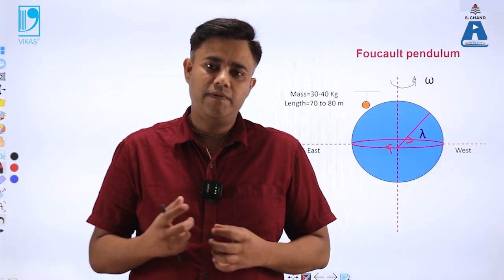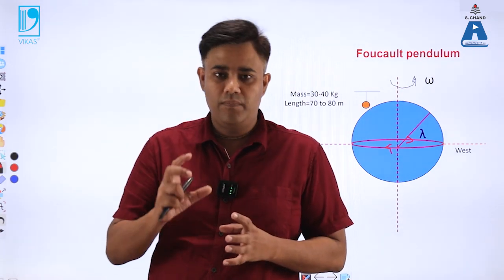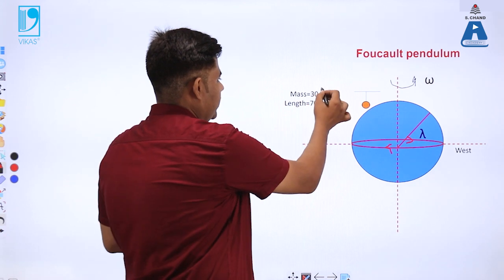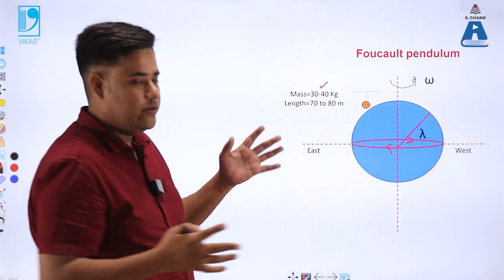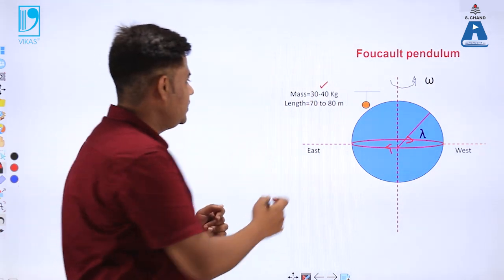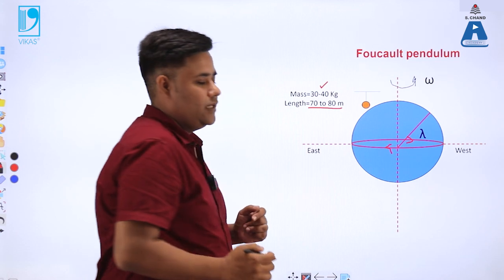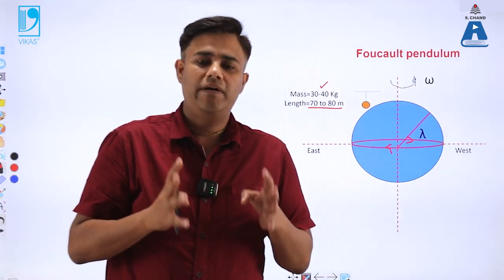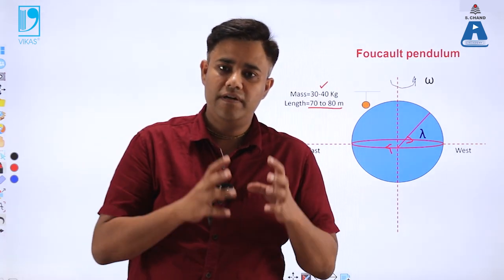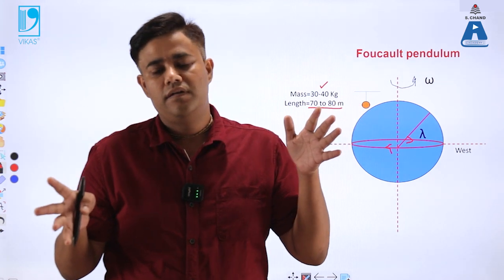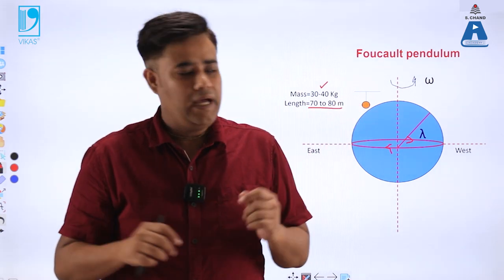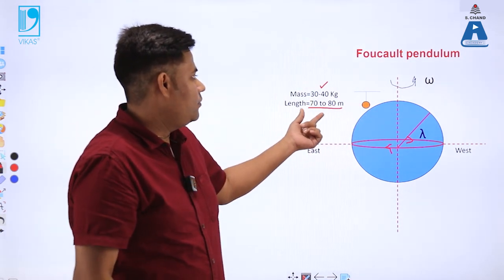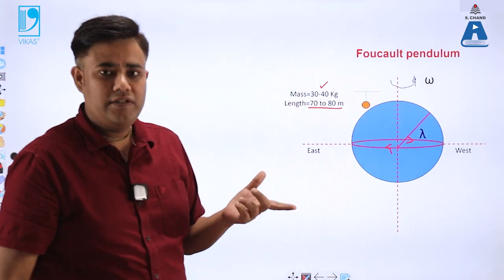A Foucault's pendulum is a kind of pendulum which resembles a simple pendulum, but the only difference is it has a bob of mass 30 to 40 kg and the length of the pendulum is around 70 to 80 meters. That means it is a pendulum with a long string and a heavy bob.